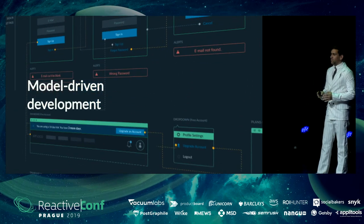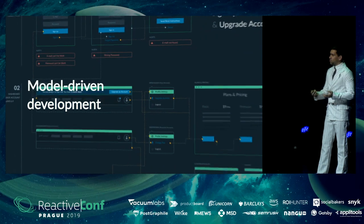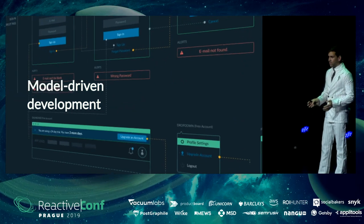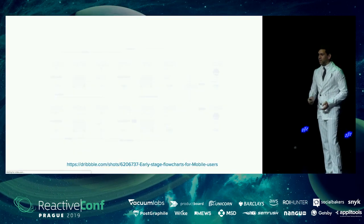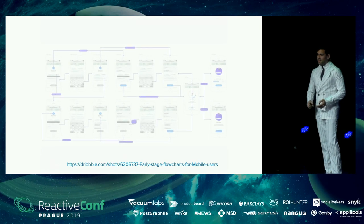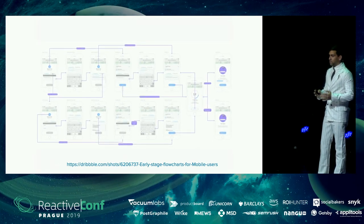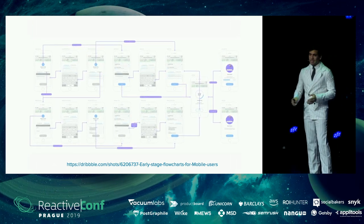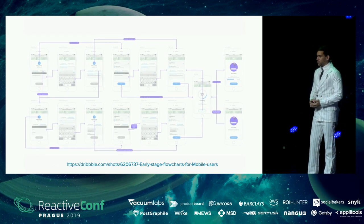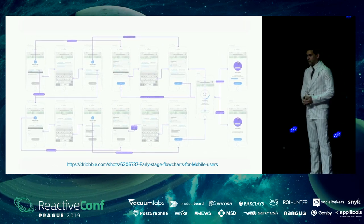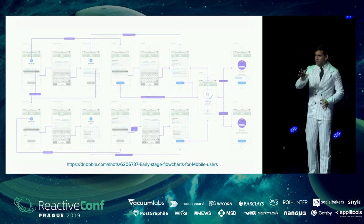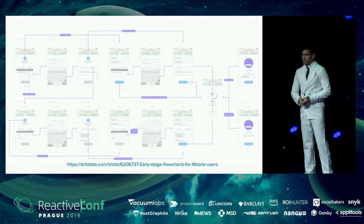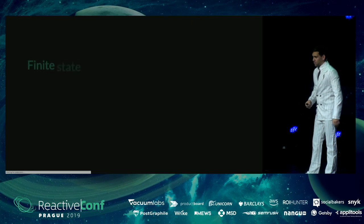One way we could tackle this problem and introduce adaptive user interfaces in everyday development is by adopting model-driven development, which is not a new concept at all. The idea is that you represent your application as an abstract model. If you've been doing design or working with designers, you might recognize user flows — they are technically a form of abstract models which tell you which state goes to which next state in the application, in a very visually clear way.